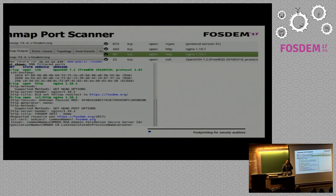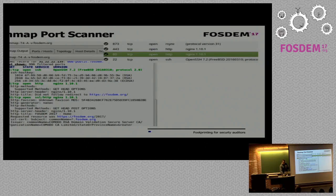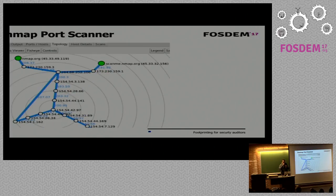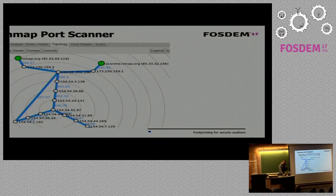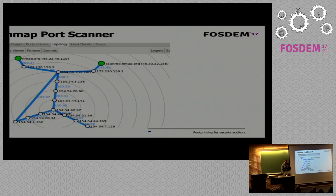The graphical version of Nmap is called ZenMap, and we can use this tool without learning any Nmap command. We can also obtain, for example, the topology of a network. If we execute a traceroute with Nmap, we can obtain the topology — what hosts the packets are passing through.